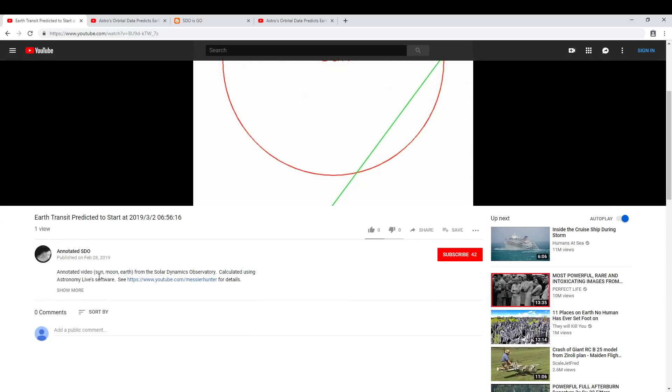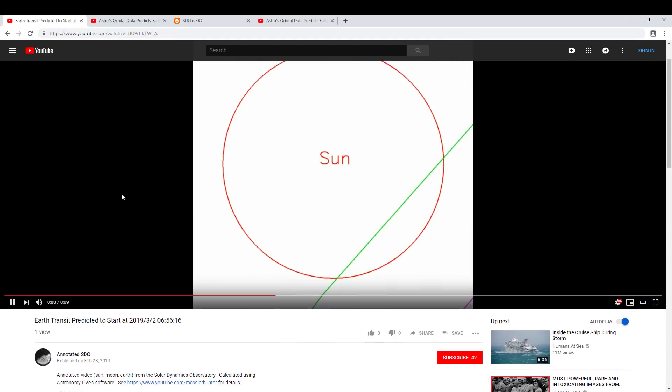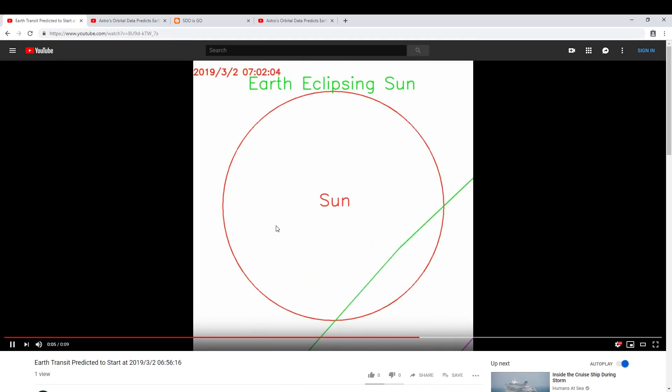I run this on the Annotated SDO YouTube channel. If you go to this channel, you'll find two playlists available. One shows predictions of upcoming transits of the sun. The other is a playlist of daily annotated videos, which have these circles and lines as overlays on top of daily time-lapse videos taken from the SDO AIA 171 images.